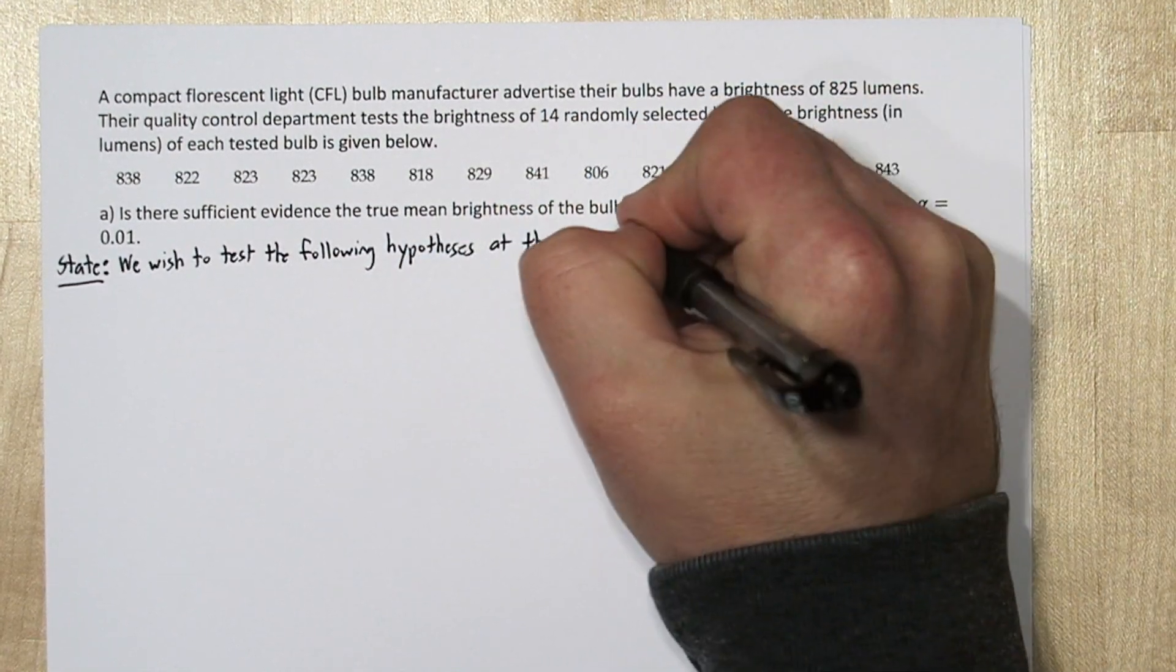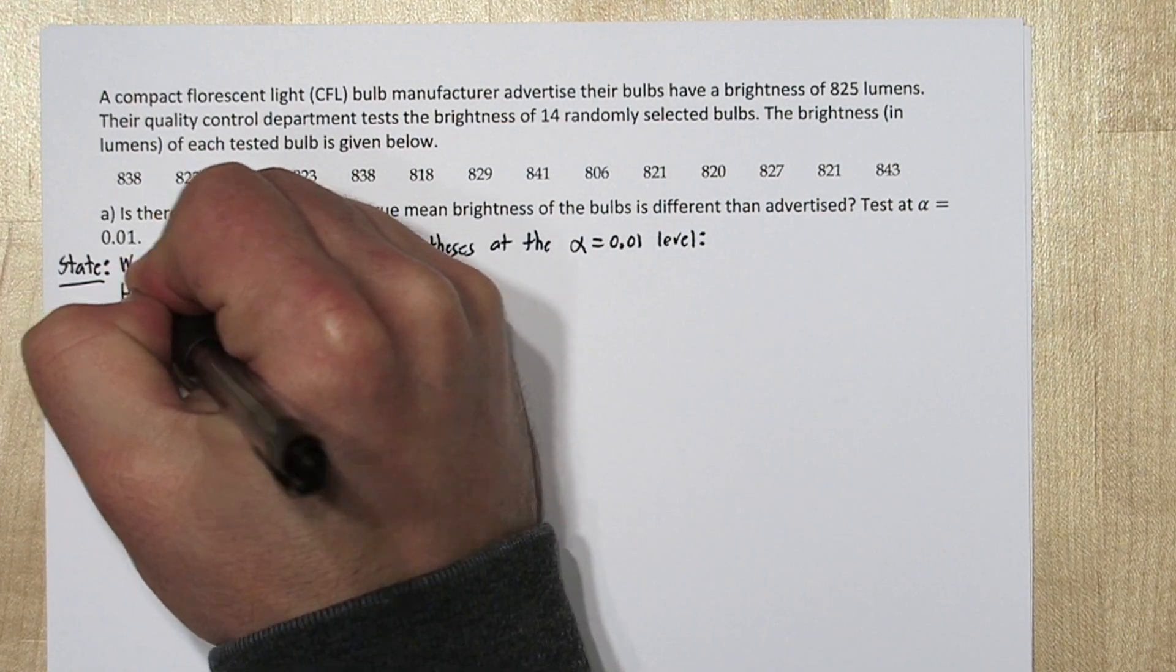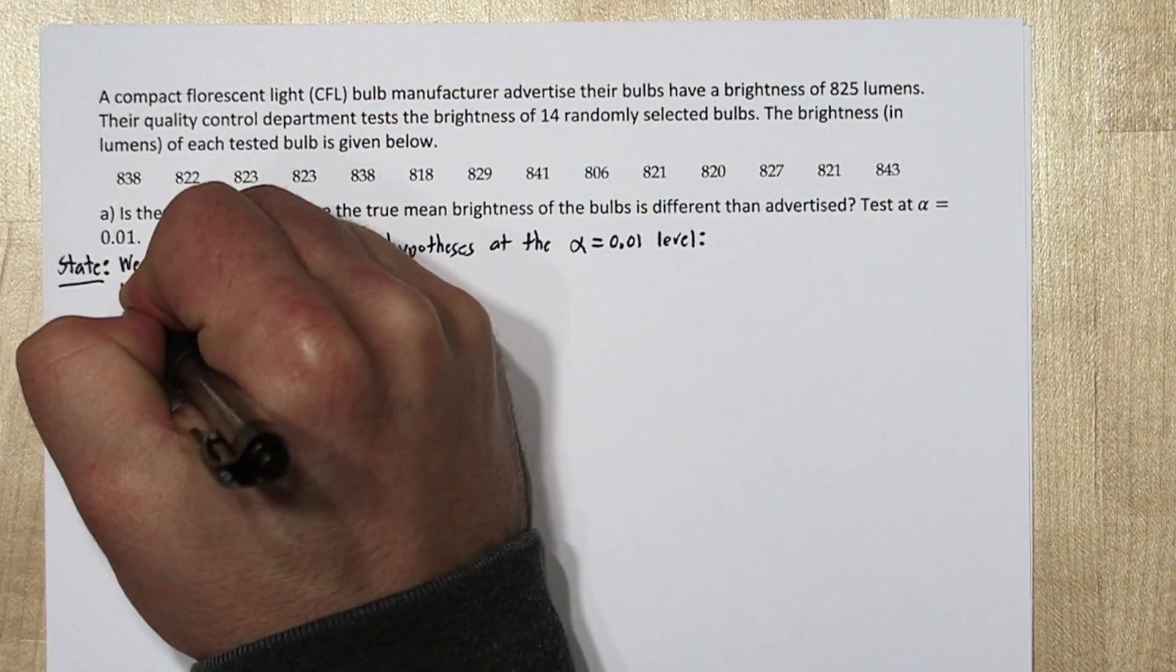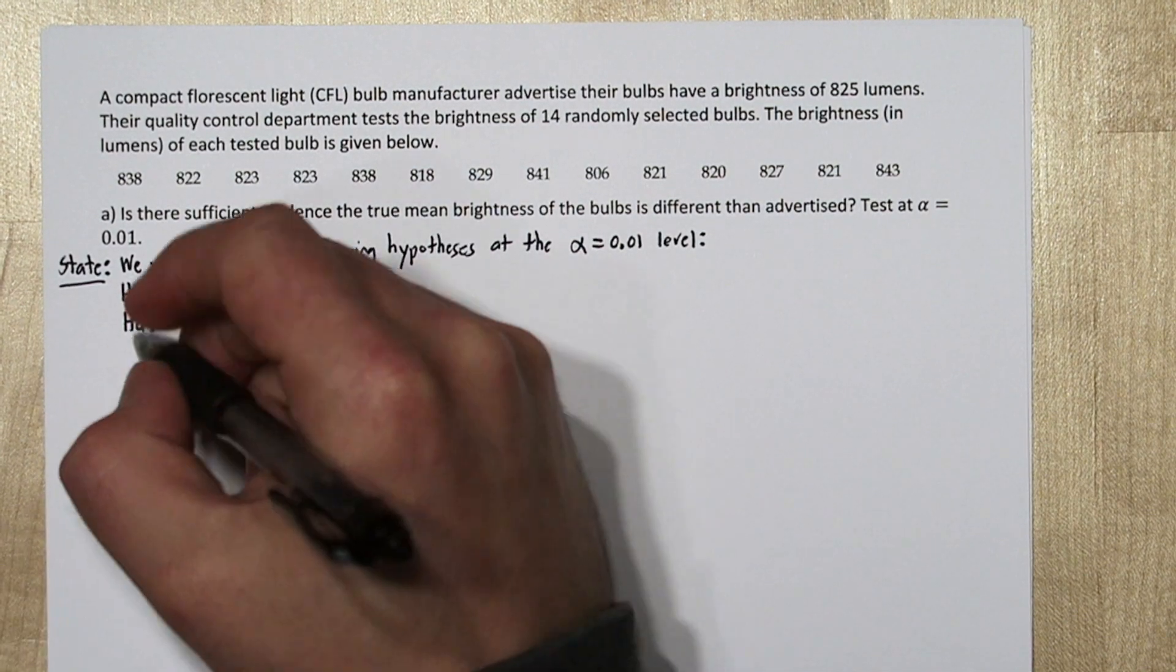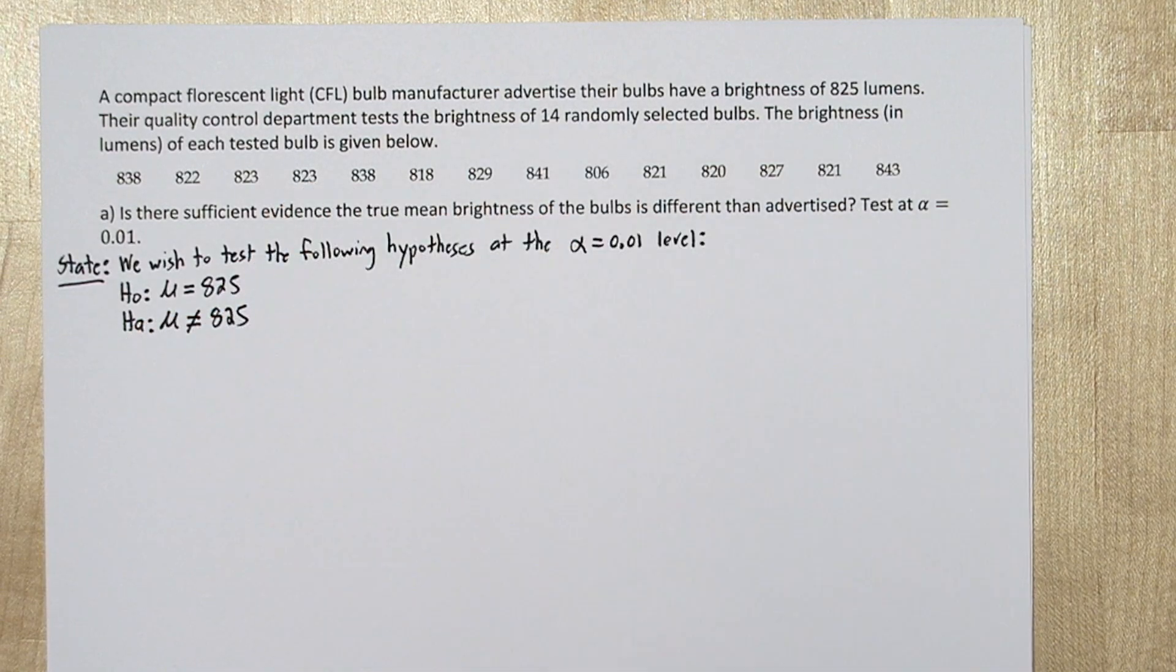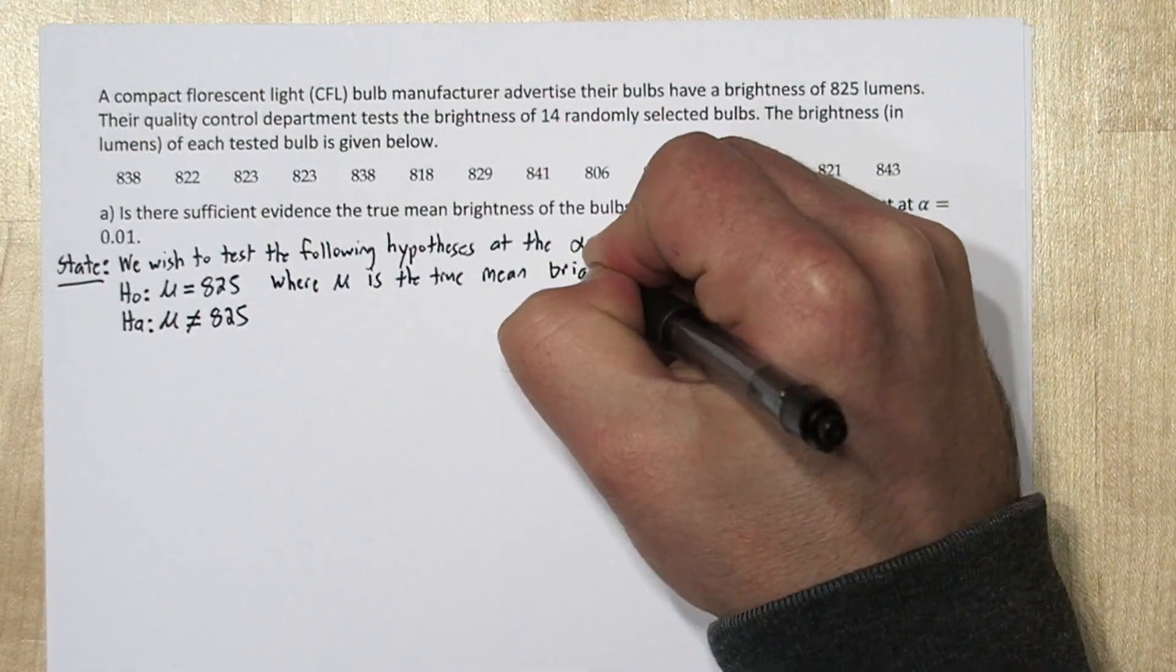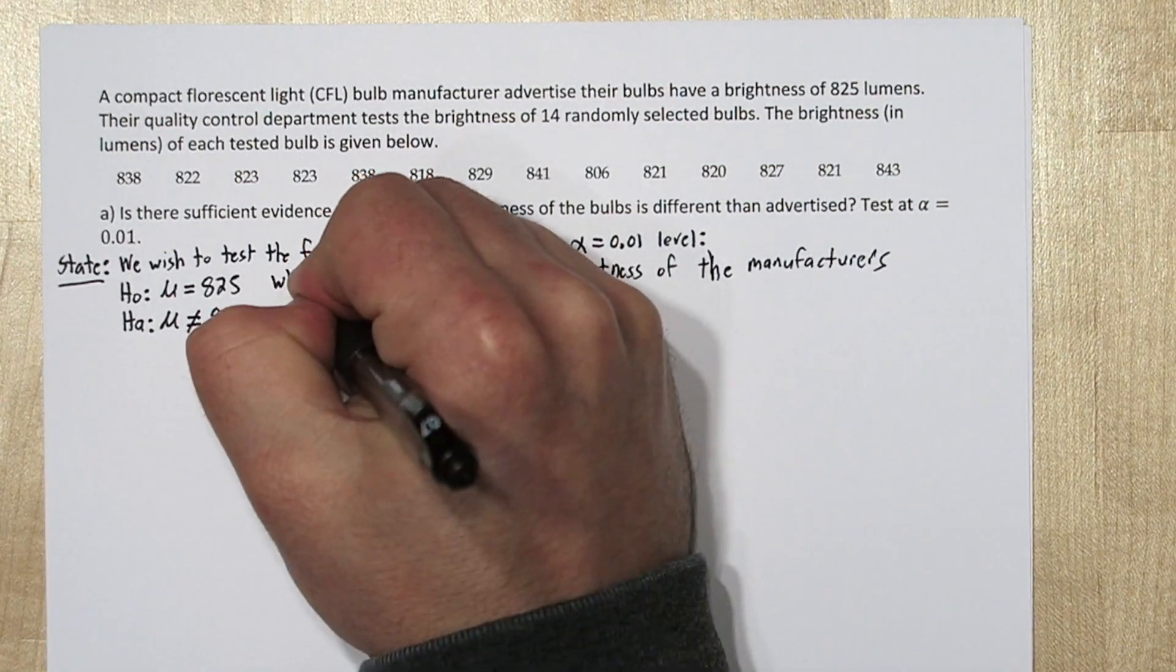We'll say we wish to test the following hypotheses at the alpha equals 0.01 level. Our null hypothesis is that mu equals 825. Since the manufacturer is probably interested in the brightness level being anything other than 825, either greater or less than 825, our alternative hypothesis is that mu is not equal to 825. And we'll define mu as the true mean brightness level of the manufacturer's CFL light bulbs.